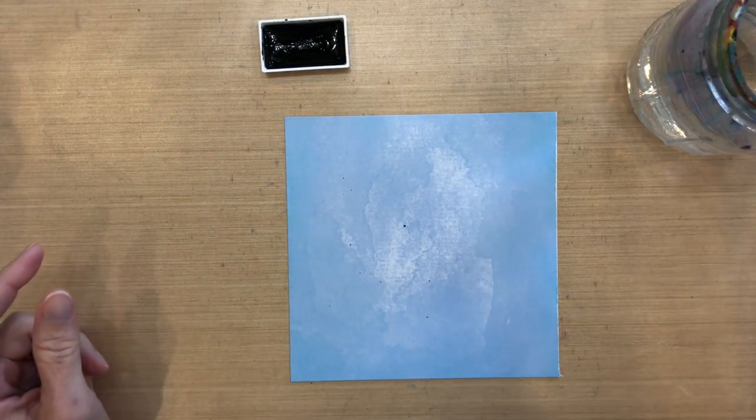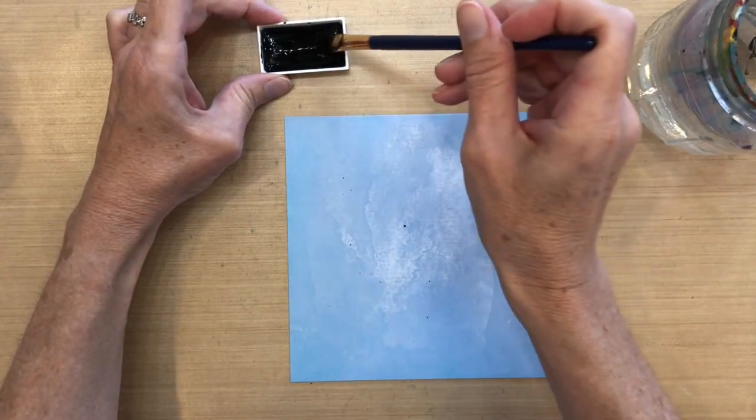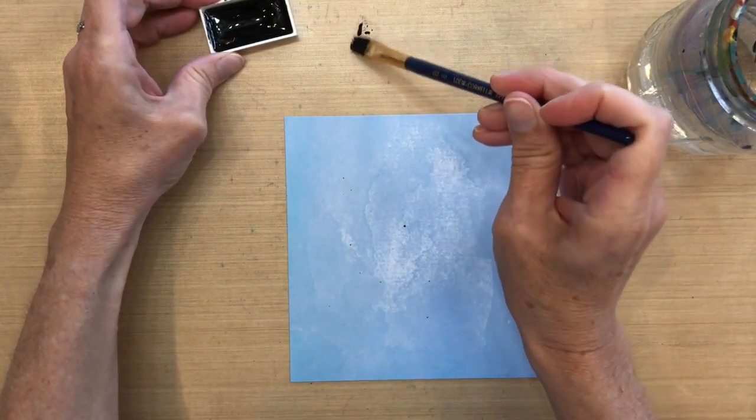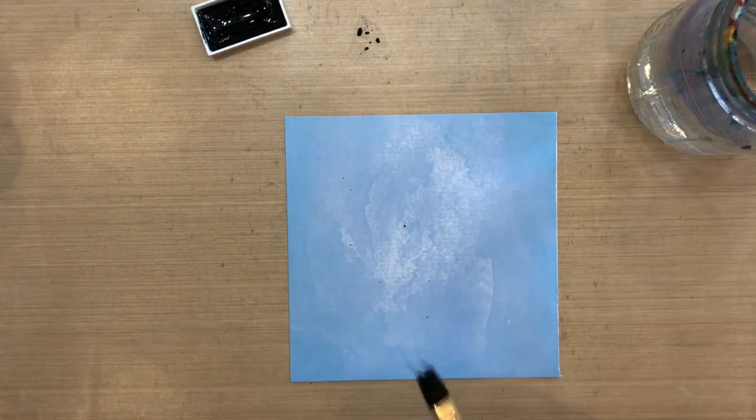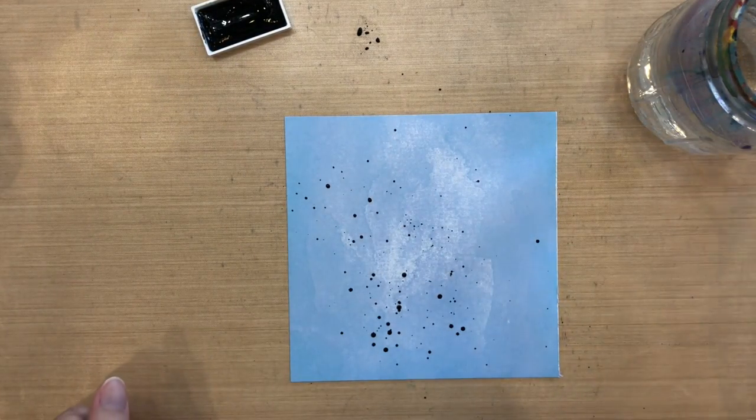The first thing I'm going to do is splatter some black Gansai Tombi watercolor onto it. I did it the first time and my drops were too small, so now I'm adding a little bit of water and now I've got some pretty large splatters.